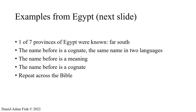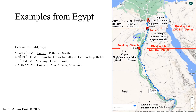The name before that province is a cognate — the same name in two languages, like Oats and Os, Maash and Masias. The name before that particular province is again a name meaning, and the name before that province is again a cognate. We repeat this process across the entire Bible and we find every name. Here we have the same method — these examples are from Egypt. The names are on the left and Google Maps is on the right.